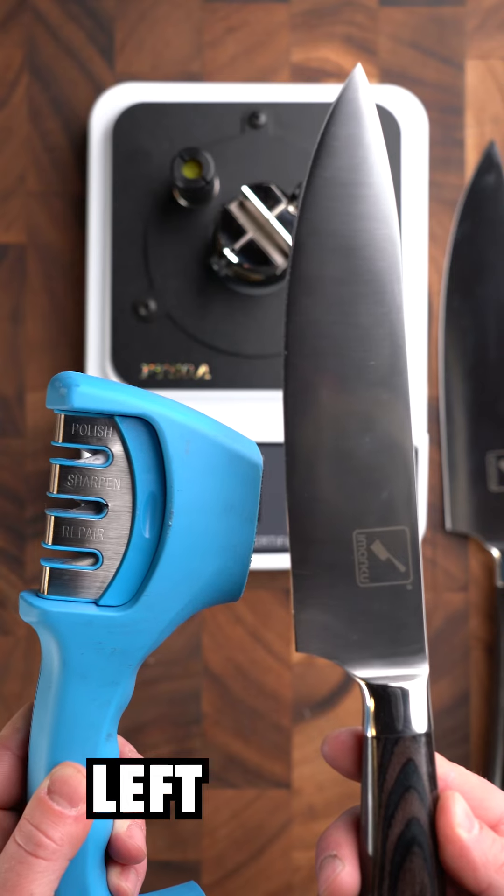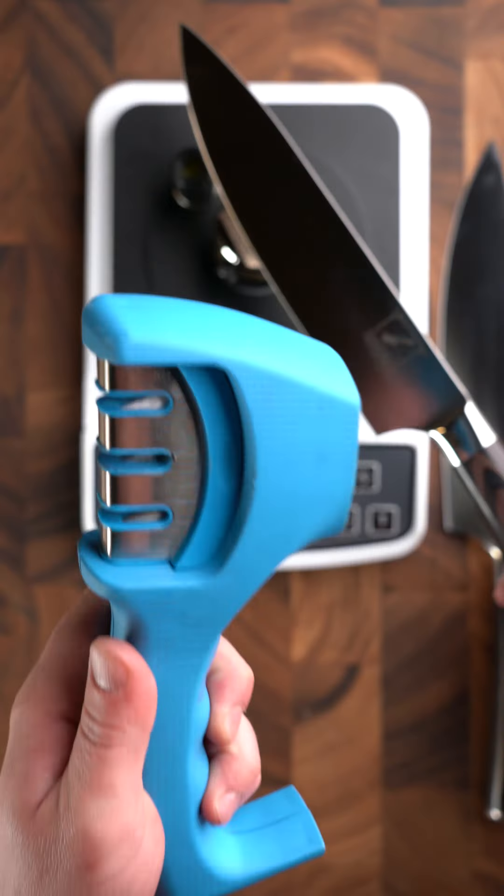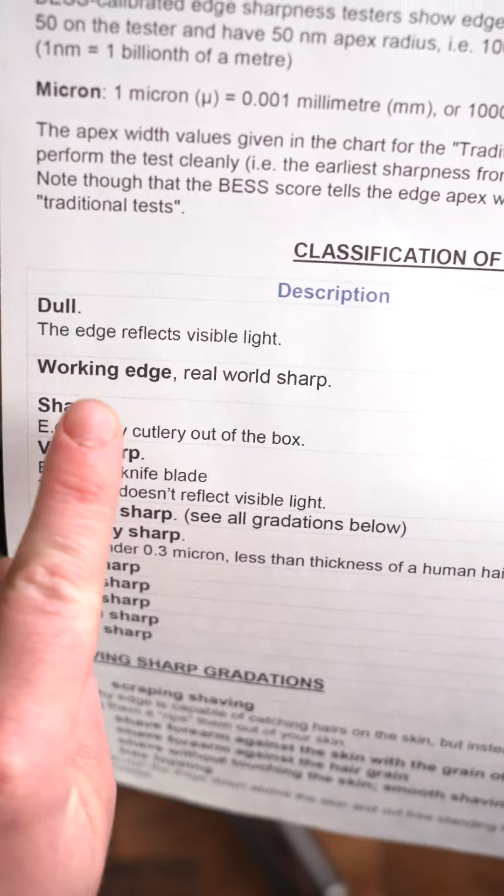All right, now for the results. Starting with the left one first. 347, that's so much worse. That's dropped all the way down to the working edge category.